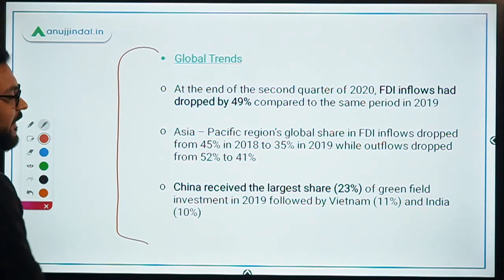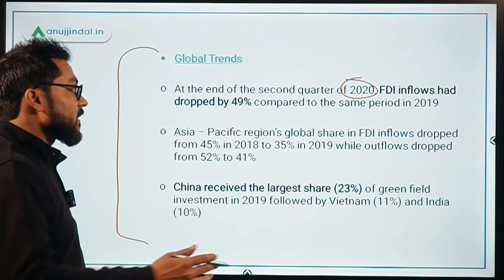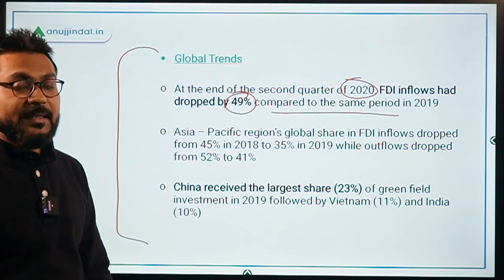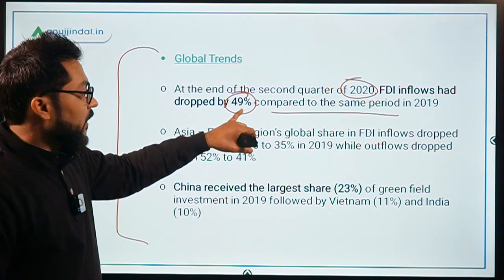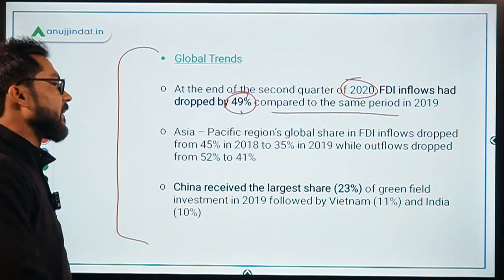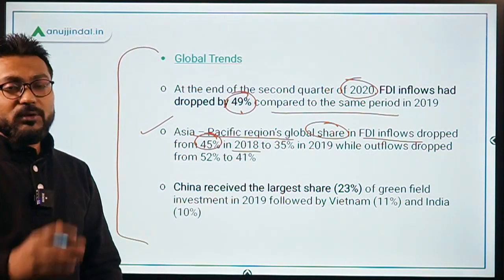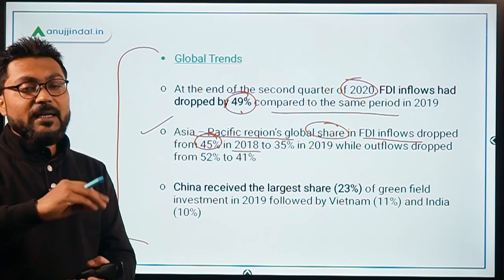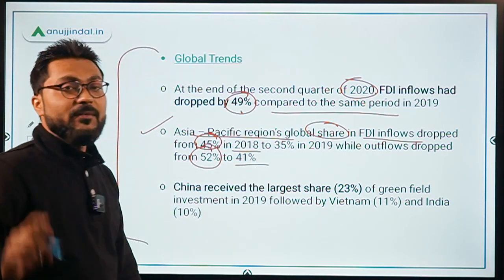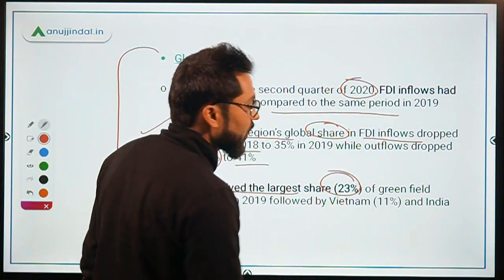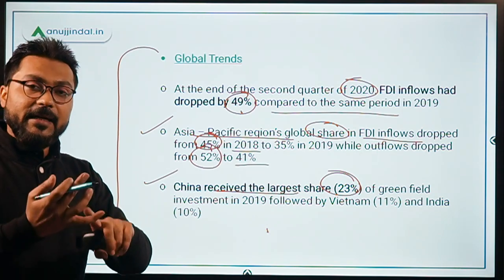The report says that at the end of the second quarter of 2020, global FDI inflows had decreased by 49% compared to the same period in 2019. The Asia-Pacific region's global share in FDI inflows dropped from 45% in 2018 to 35% in 2019, while its share in global FDI outflows decreased from 52% to 41%. China received the largest share — 23% of greenfield FDI in 2019, followed by Vietnam at 11% and India at 10%.